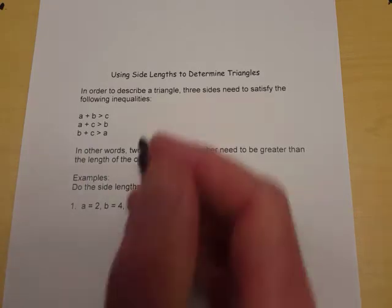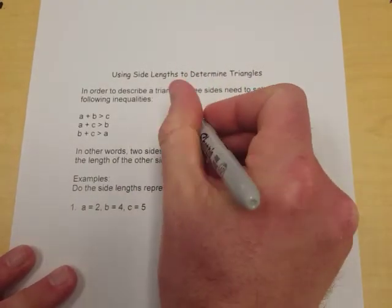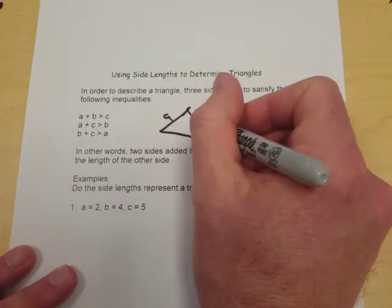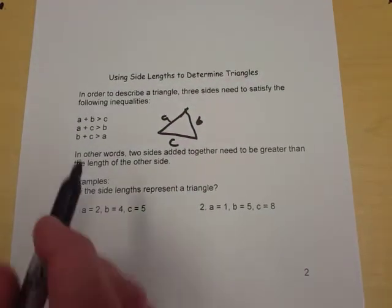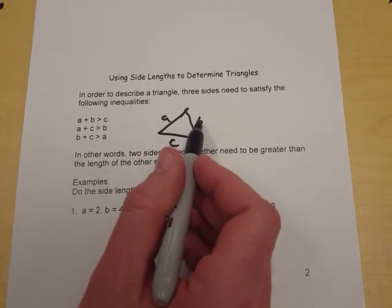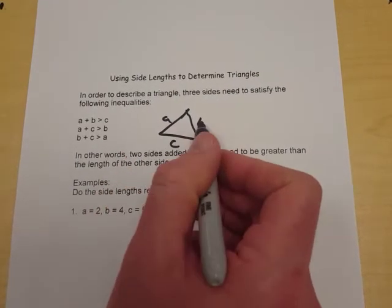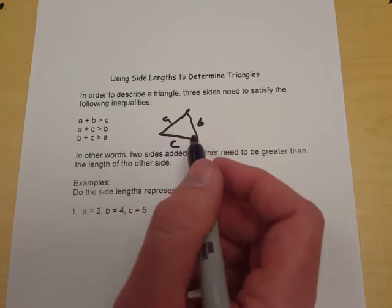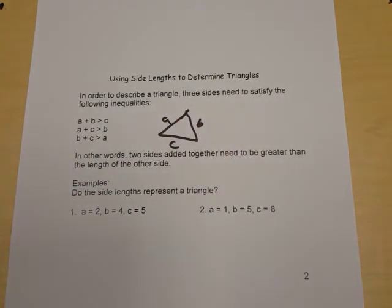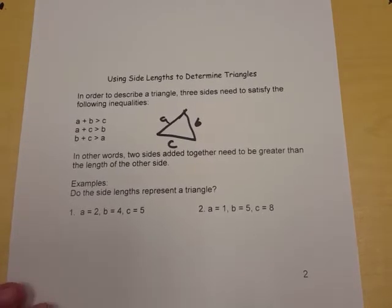If I've got some triangle with side lengths A, B, and C, these two added together have to be greater than the third, these two have to be greater than the other one, and the other pair has to be greater than the third side. Every pair of sides added together has to be bigger than the opposite side that's left over.